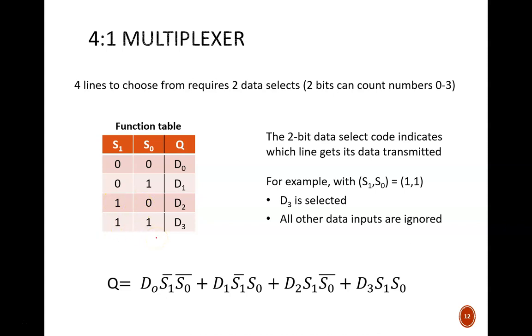If, for example, we want to select data line number 3, we can set the two S inputs to read 1, 1, which is the binary code for decimal 3.